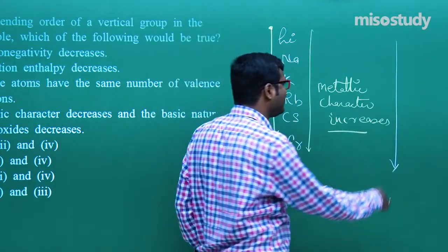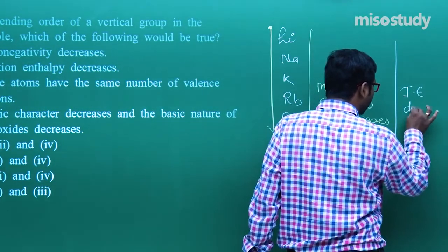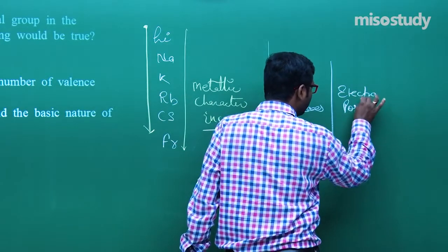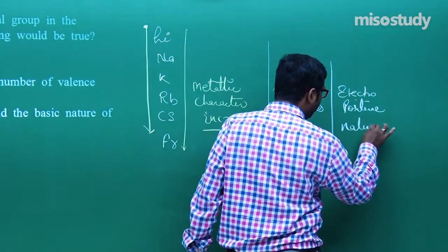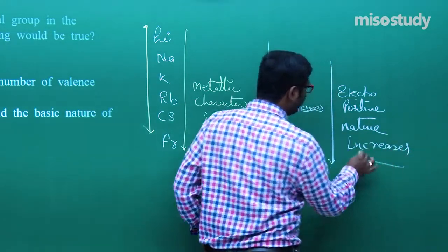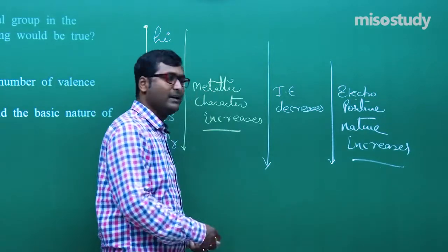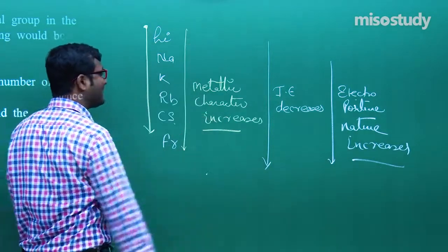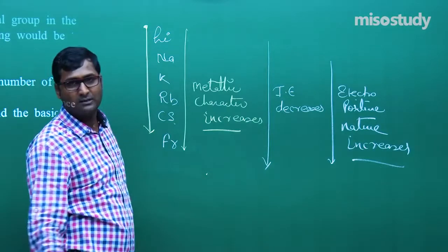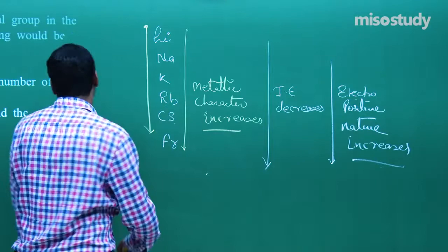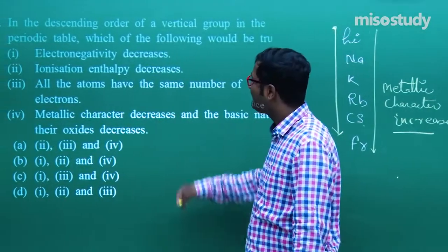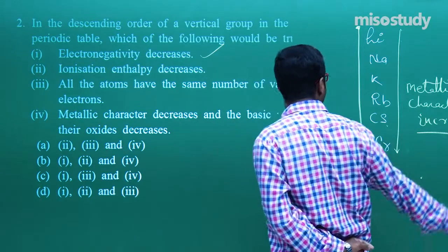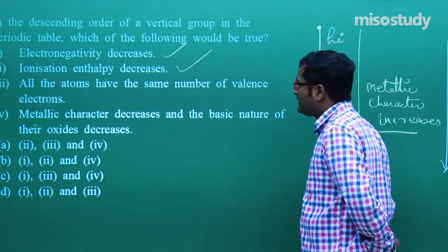If metallic character increases, electro-positive nature increases, which means ionization energy decreases. If ionization energy decreases, electro-positive character increases. If electro-positive nature increases, there is a corresponding decrease in electro-negative character, because metals are electro-positive. So option A is correct — ionization enthalpy decreases — and all atoms in the same group contain an equal number of valence electrons.